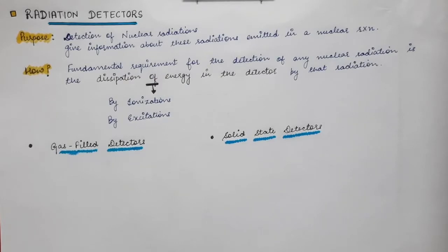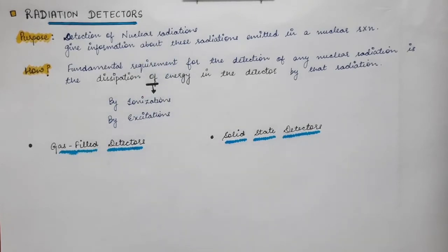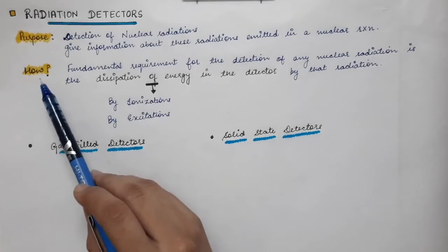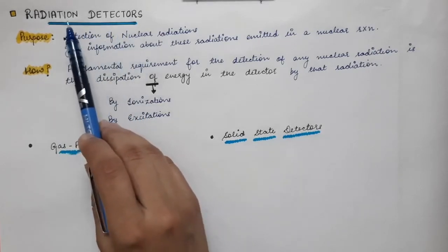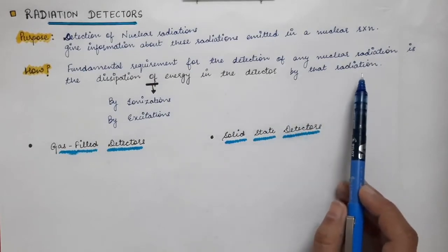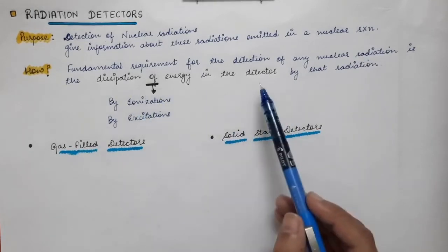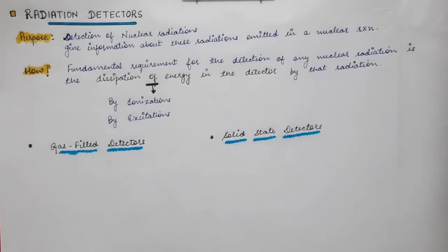In a radiation detector there is some material — the main component is the medium. The incoming nuclear radiation passes through the medium of the detector and transfers its energy to the atoms or molecules of that medium. The main criterion for detection is that there must be a dissipation of energy in the detector by that radiation, so the incoming alpha, beta, or any nuclear radiation must transfer its energy to the medium of the detector.